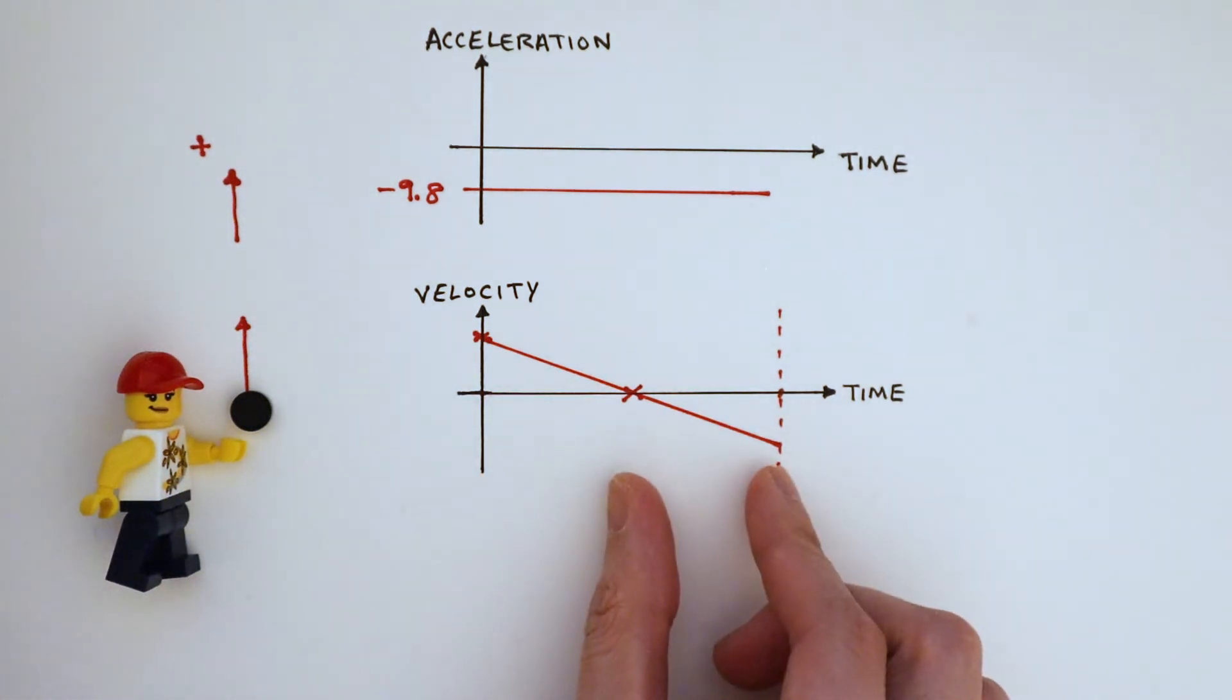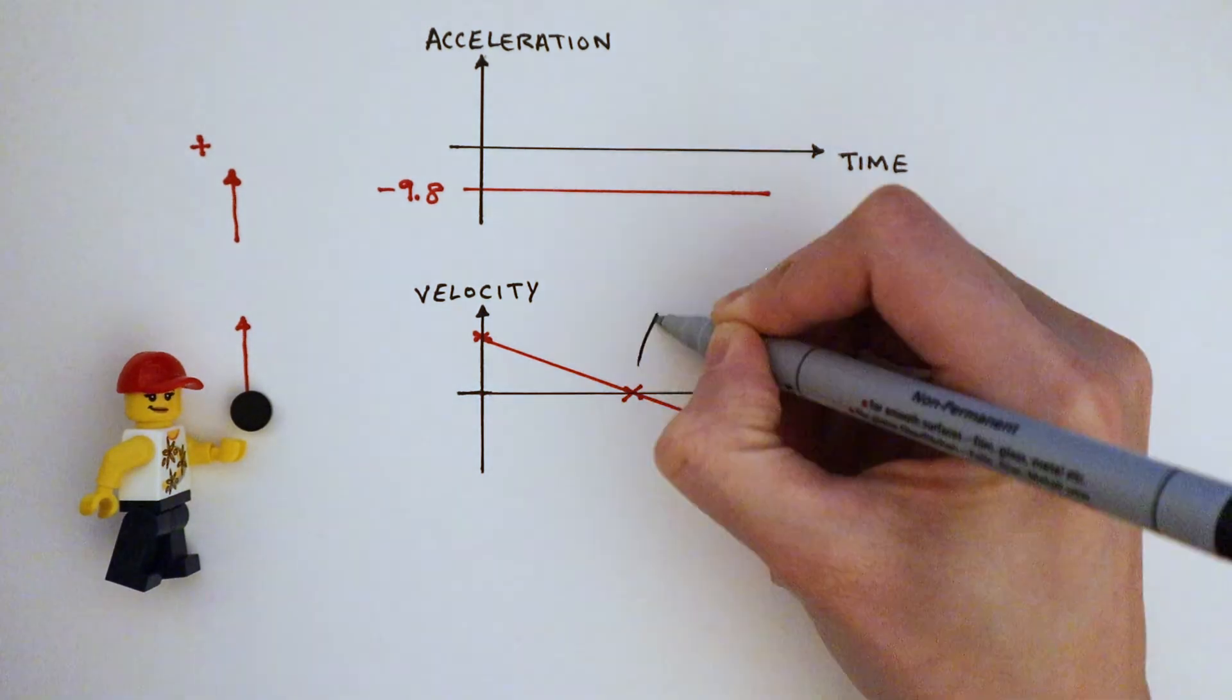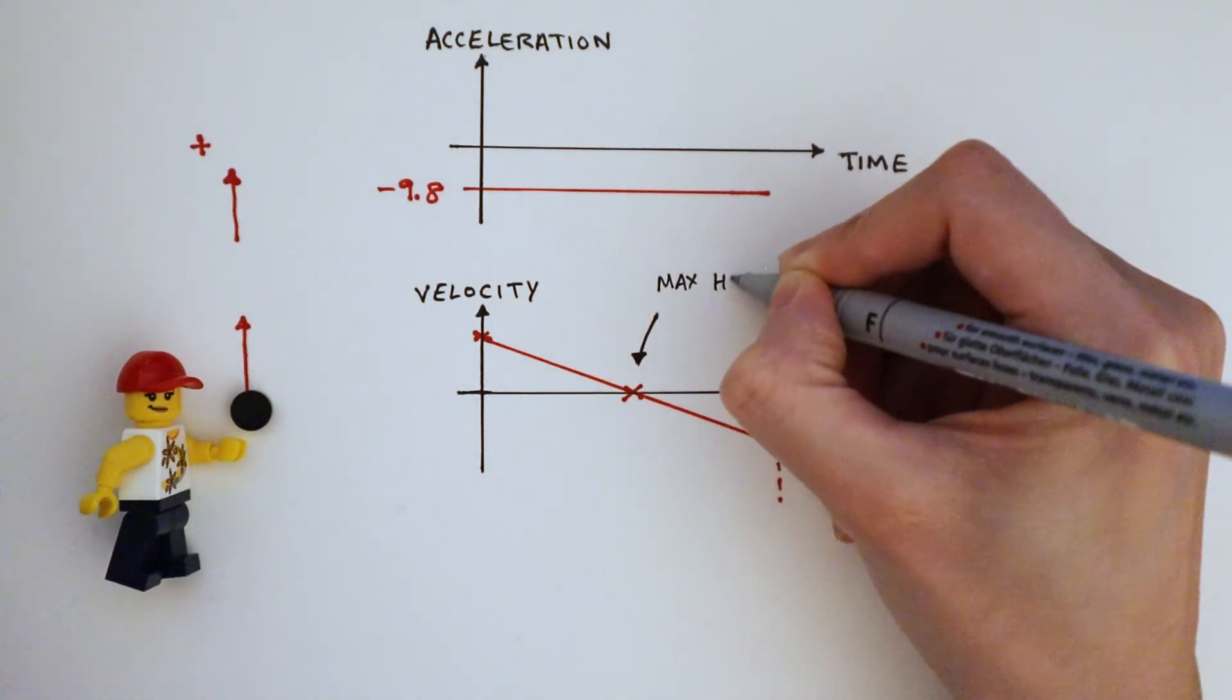This region here is showing negative velocity because the ball is traveling in the opposite direction to its initial motion. And this is the point that the ball reaches its maximum height.